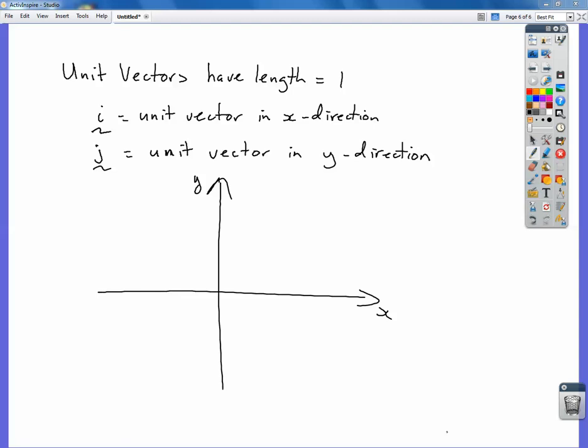So we use i and j. i is a special vector, it's a unit vector in the x direction. That's a vector which has a unit length, a length of one in the x direction, and j has a length of one in the y direction.